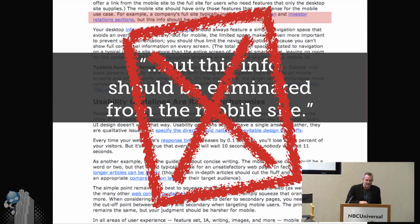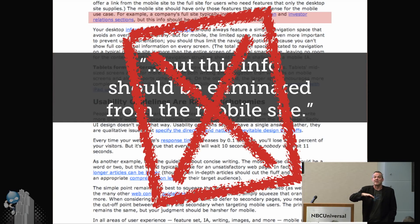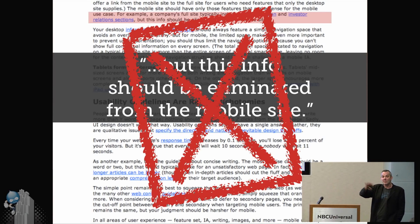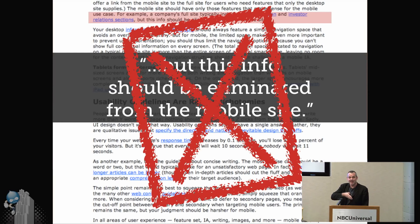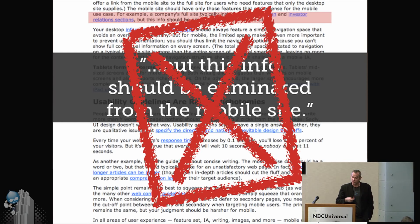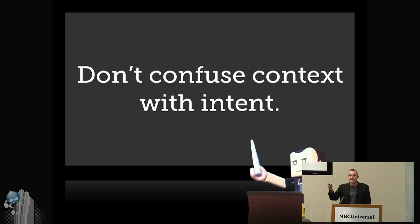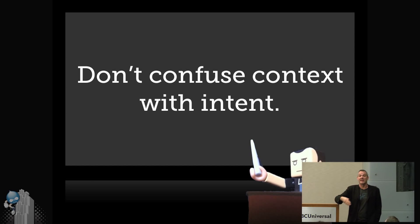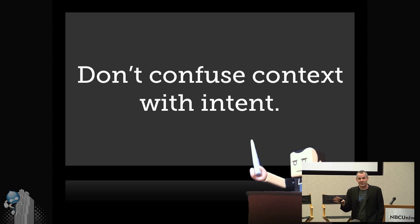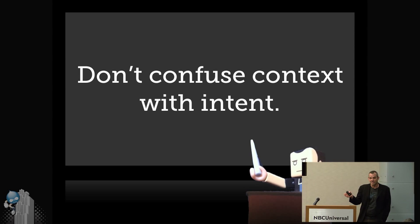What he's doing is confusing context with intent. All that we know about somebody who's looking at your website on a small screen is that they're looking at it on a small screen. And yet we make all these assumptions: they're on a bus, they're in a hurry, they don't want to make a purchase, they don't care about PR and investor relations. It might be that people don't care about PR and investor relations — but that means it doesn't belong on any of your websites, right? If it's not good for the mobile user, it's not good for any user, because we're the same people.